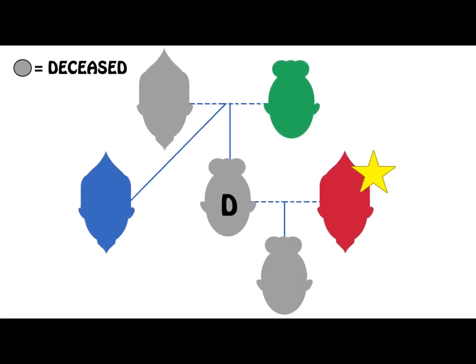For example, Dee dies intestate. Her son and her father have predeceased her. Dee is survived by her husband, her mother and her brother. In this situation, where there is a surviving spouse and no descendants, the surviving spouse — Dee's husband — will inherit the whole estate.